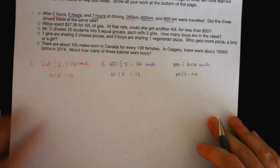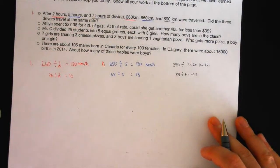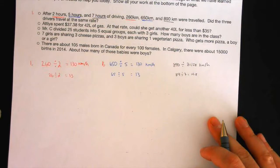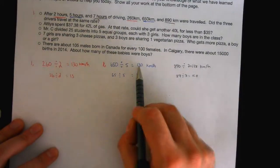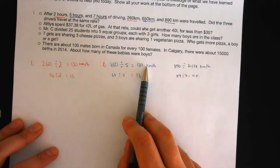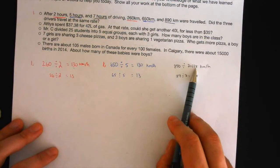So do we have our answer? We do have our answer. So what is it? Did the three drivers travel at the same rate? In this case, were they all going the same speed? No, they weren't. Because these 1 and 2 were going 130, and the last driver was going 128.